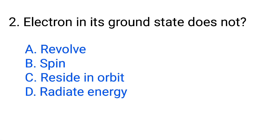Question number 2. Electron in its ground state does not... Option A: Revolve. B: Spin. C: Reside in orbit. D: Radiate energy. The correct answer is option D, Radiate energy.